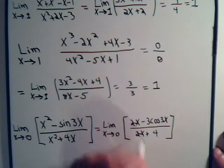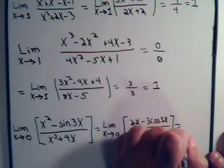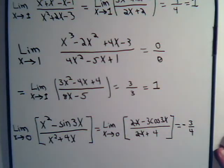This goes away, this goes away. The cosine of 0 is 1. So this comes out to equal minus 3 over 4. So here are just three very basic applications of L'Hôpital's Rule.